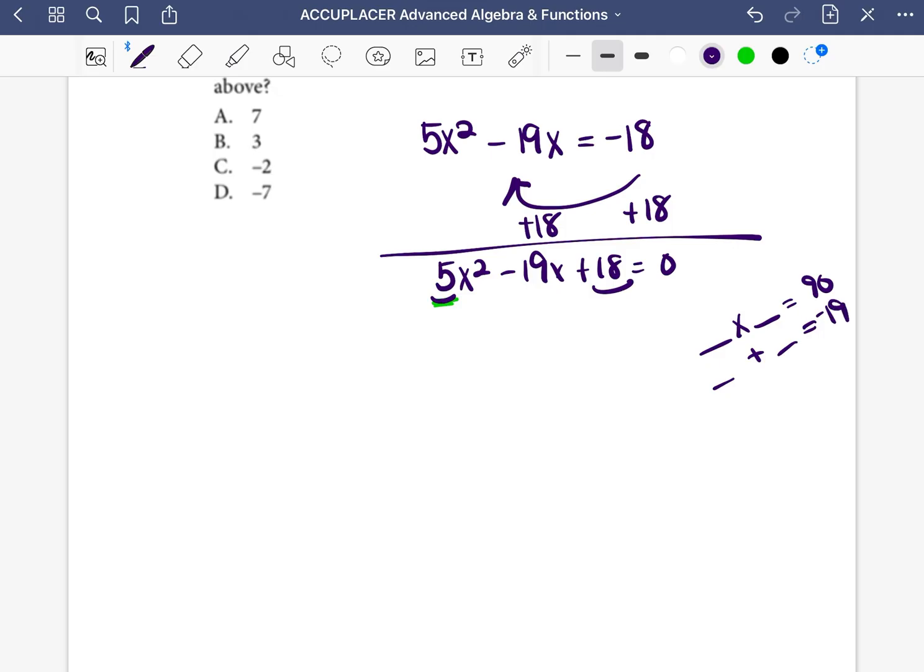You can do a little bit of guess and check. 10 and 9 equal 90, and 10 and 9 equal 19. But because they have to equal negative 19, I'm going to do negative 10 and negative 9. So what we're going to do here is replace this -19x with -10x and -9x. So it's going to be 5x² - 10x - 9x + 18 = 0.